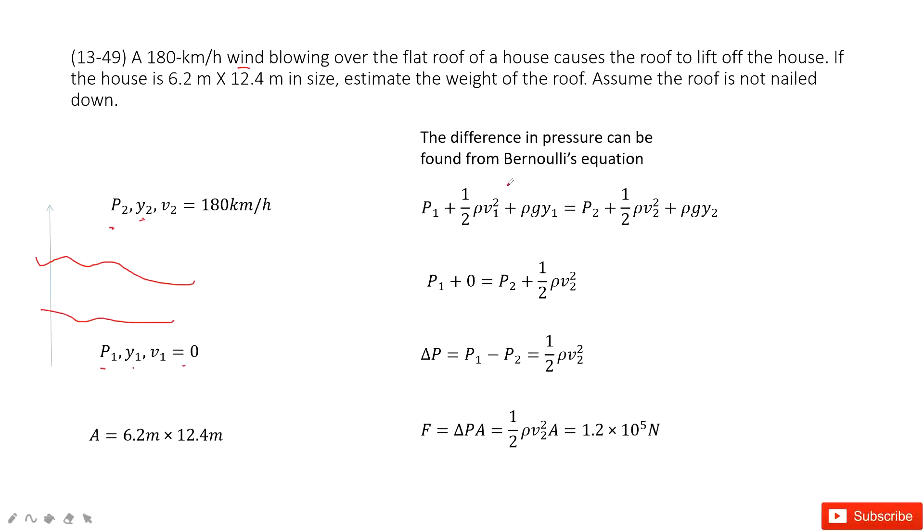So we can consider Bernoulli's equation. At the initial position, we have the equation: p1 plus one half rho v1 squared plus rho g y1. And at position 2, similarly, we have the equation. So both sides equal. Now we can see v1 equal to 0, y1 equal to y2. So this term cancelled.